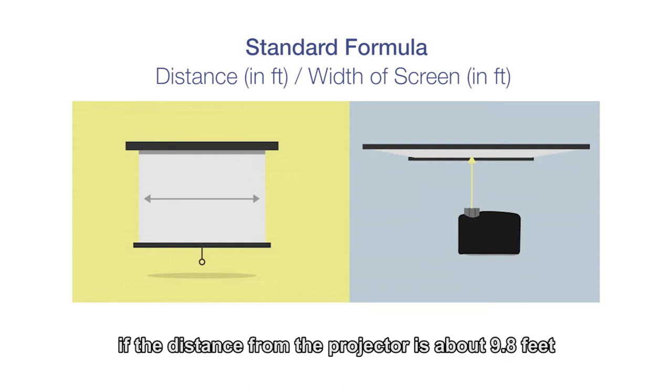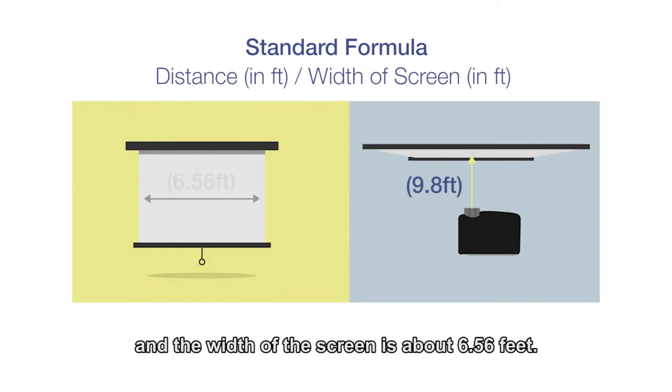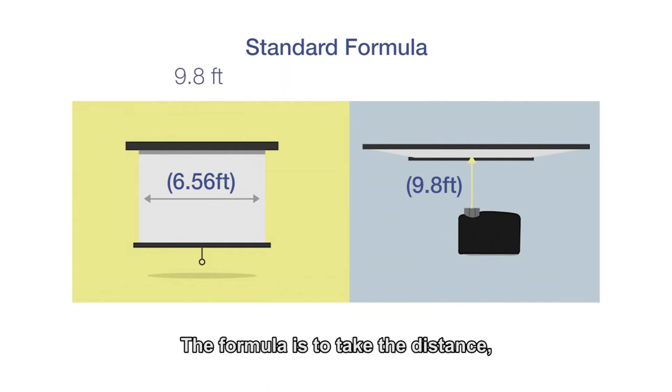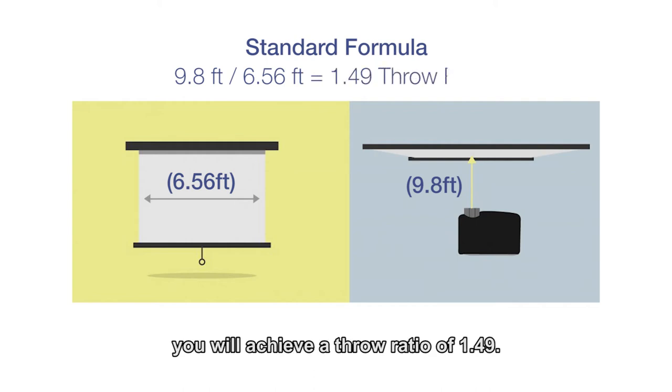So let's take for example, if the distance from the projector to the screen is about 9.8 feet and the width of the screen is about 6.56 feet, the formula is to take the distance divided by the width of the screen. Based on this calculation method, you will achieve a throw ratio of 1.49.